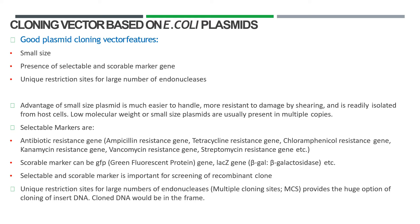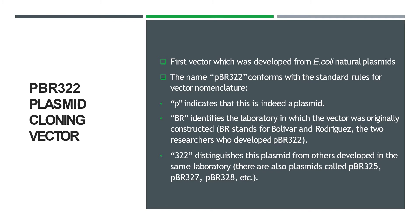The presence of unique restriction sites for a large number of endonucleases — such as multiple cloning sites (MCS) — provides a huge option for cloning of insert DNA into the cloning vector. MCS is very important: it allows the vector to make multiple copies of clones of itself as division takes place inside the bacterium with the foreign DNA present.